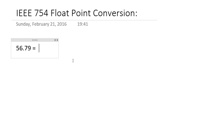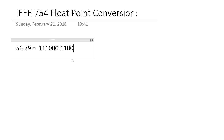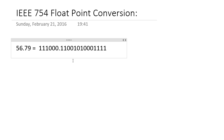So this number 56.79 — if we convert this into binary form we get 111000, and after the point we have 1100 1010 0111 1. So this is the direct conversion into binary.